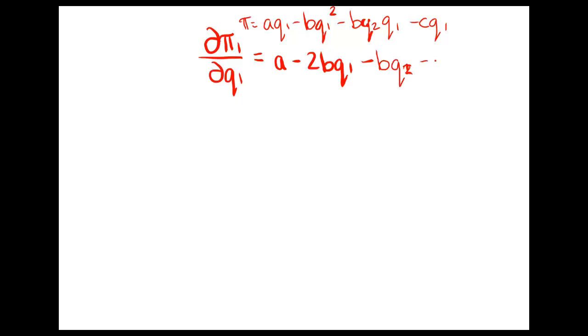So now taking the derivative of that, and it's actually the partial derivative because we have more than one variable in our equation. So we're just doing it with respect to quantity one, and then we're going to set that equal to zero. Taking the derivative of AQ1 minus BQ1 squared minus BQ2Q1 minus CQ1, that was our profit from before. So taking the derivative gives us A minus 2BQ1 minus BQ2 minus C. And we're going to set that equal to zero. We want to isolate for Q1. So we're going to put that to the other side.